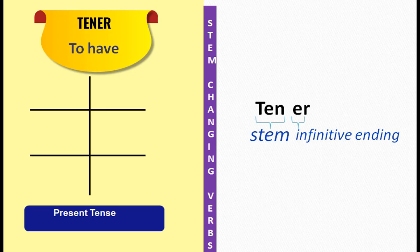The first verb here is TENER, which means 'to have.' Friends, you need to know this verb — it's used in everyday language. Whether you read a Spanish newspaper, talk to Spanish-speaking people, or watch a video, this verb will pop up very often. Now, if we break TENER into two parts: we have the -ER infinitive ending, and the rest of the verb TEN forms the stem. The vowel in the stem is A, and it undergoes the transformation A to IE.